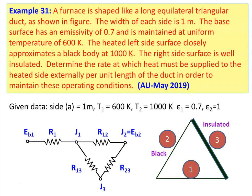We take example number 31. A furnace is shaped like a long equilateral triangular duct as shown in the figure. The width of each side is 1 meter. The base surface has emissivity of 0.7 and is maintained at a uniform temperature of 600 Kelvin. The heated left side surface closely approximates a black body at 1000 Kelvin. The right side surface is well insulated. Determine the rate at which heat must be supplied to the heated side externally per unit length of the duct to maintain these operating conditions. This question is from AU May 2019.